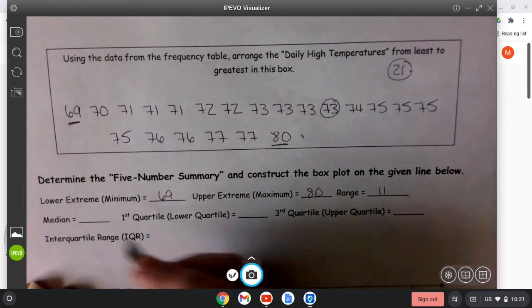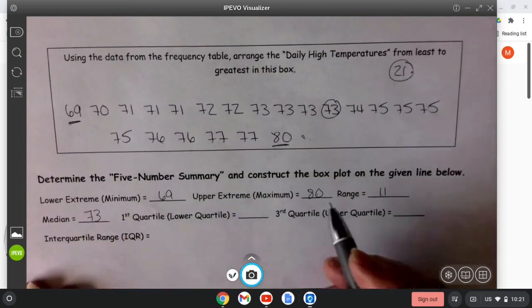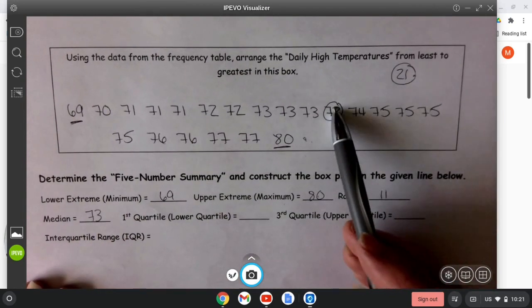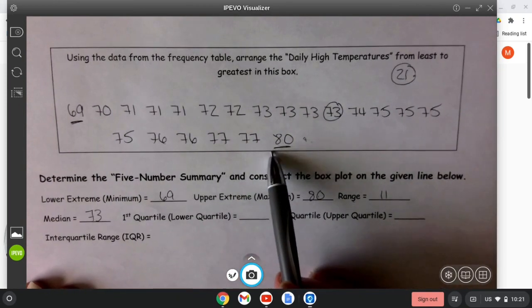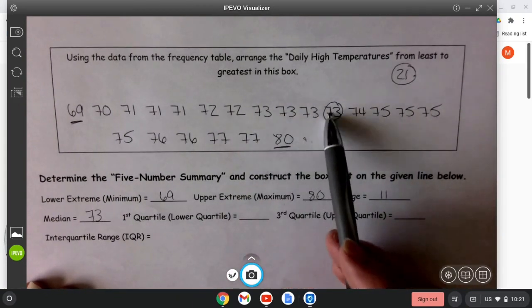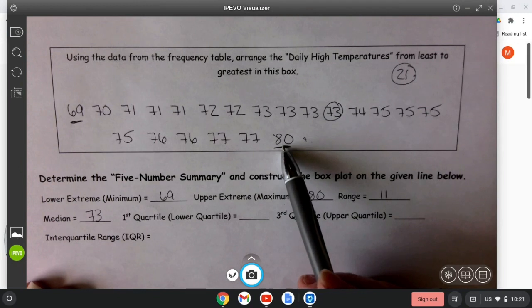So this 73 is the median, and what that does is it splits our data into a bottom half and a top half. 50% are below the median, 50% are above the median.